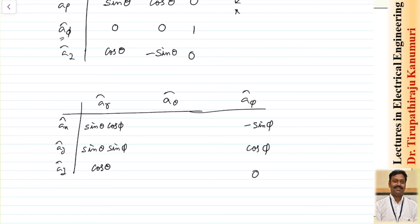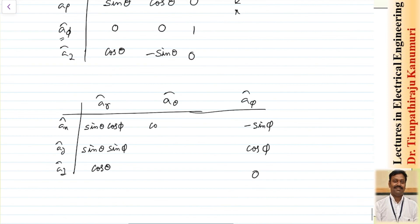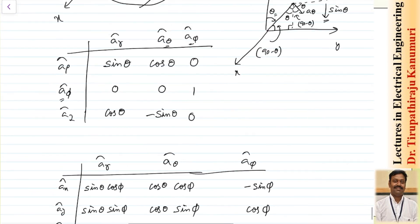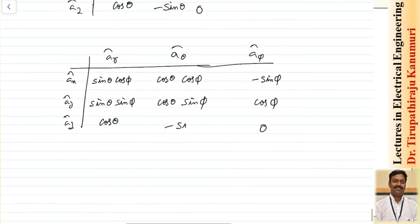For a_theta: the xy plane component is cos(theta), which is then resolved into x and y by multiplying by cos(phi) and sin(phi) respectively. So the x-component is cos(theta)·cos(phi), the y-component is cos(theta)·sin(phi), and the z-component is −sin(theta) since a_theta points opposite to z.